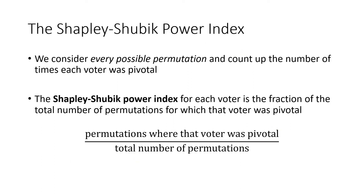So what is the Shapley-Shubik power index? We look at every possible permutation and count up the number of times each voter was pivotal. The Shapley-Shubik power index for a voter is the fraction of the total number of permutations for which that voter was pivotal — the numerator is the number of times that voter was pivotal, and the denominator is the total number of permutations.